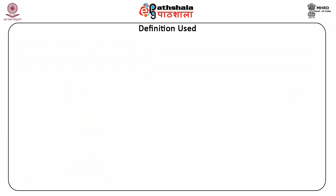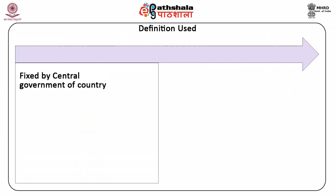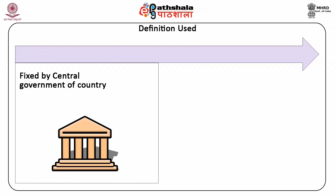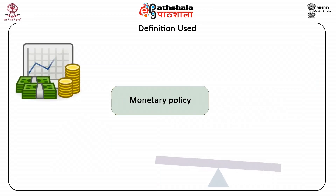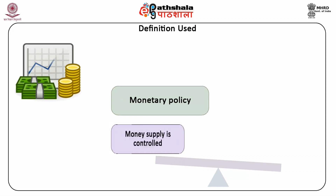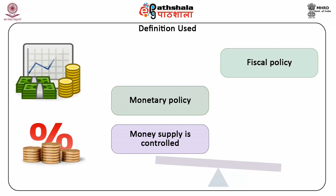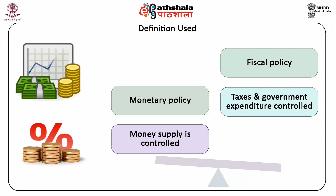Fixed Exchange Rate: It is the exchange rate that is fixed by the central bank of the country. Flexible Exchange Rate: It is the exchange rate determined via market forces, i.e., by demand and supply of currency in the foreign exchange market, and is allowed to change in response to changing economic conditions. Monetary Policy: It is the policy by which the money supply is controlled in the economy. Fiscal Policy: It is the policy by which taxes and government expenditure are controlled in the economy by the government.